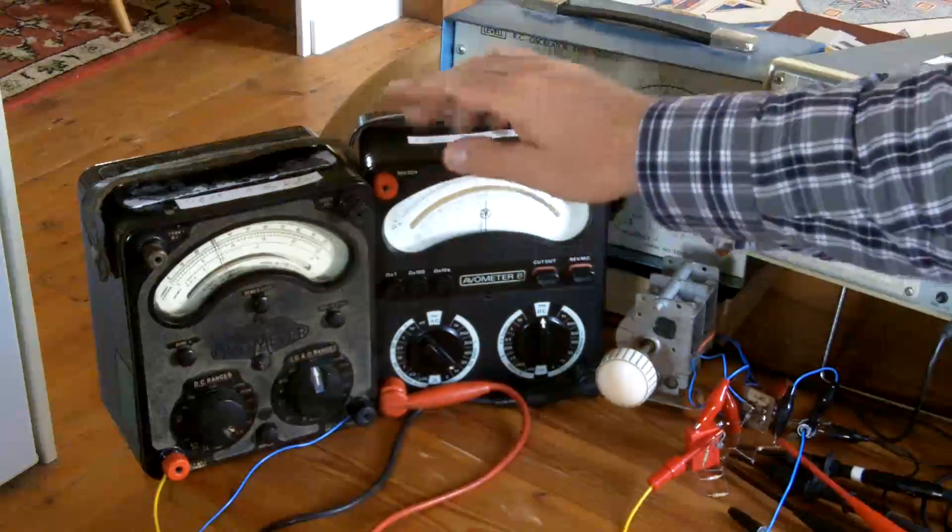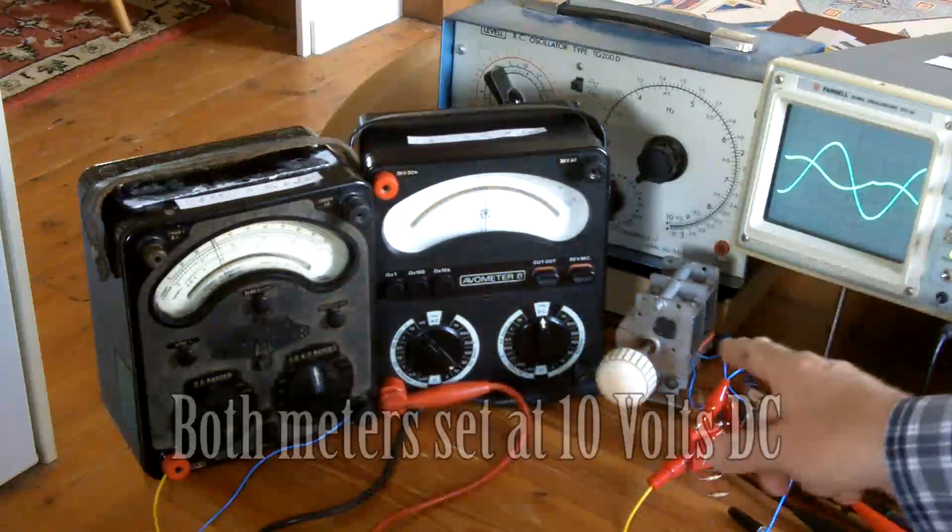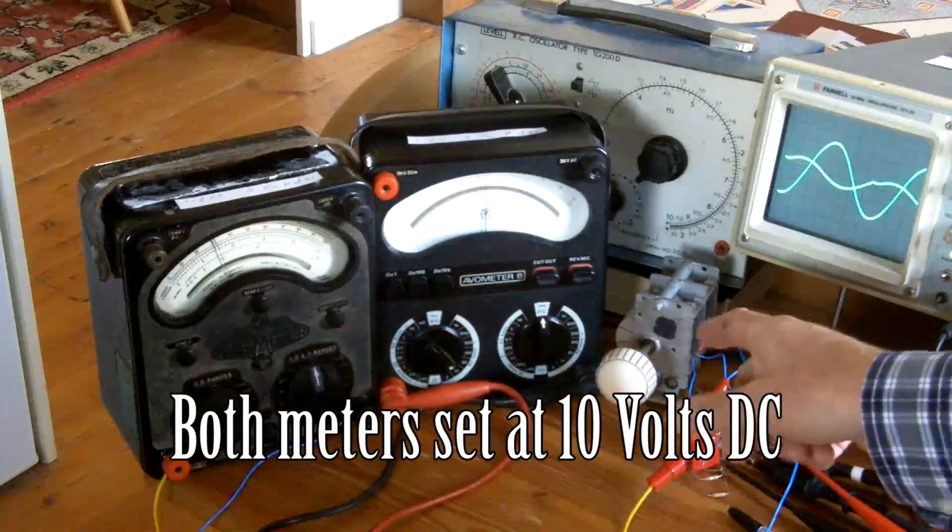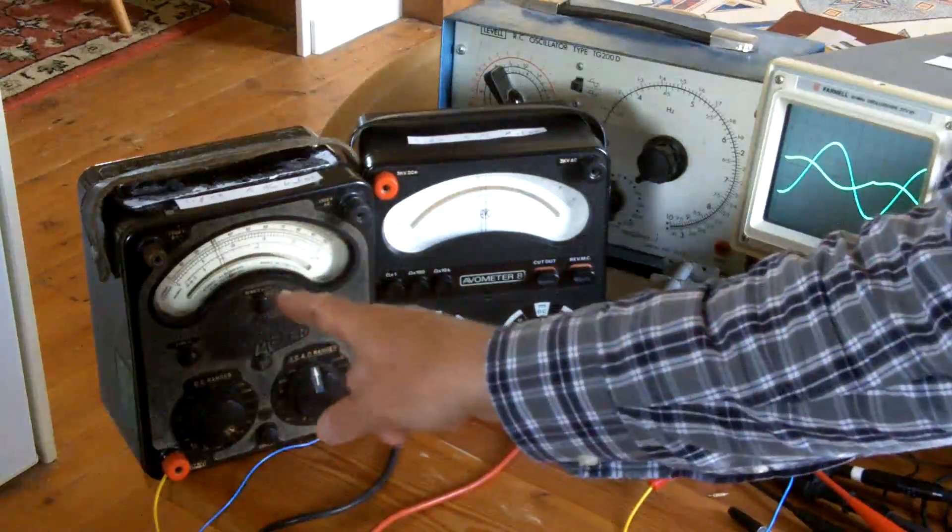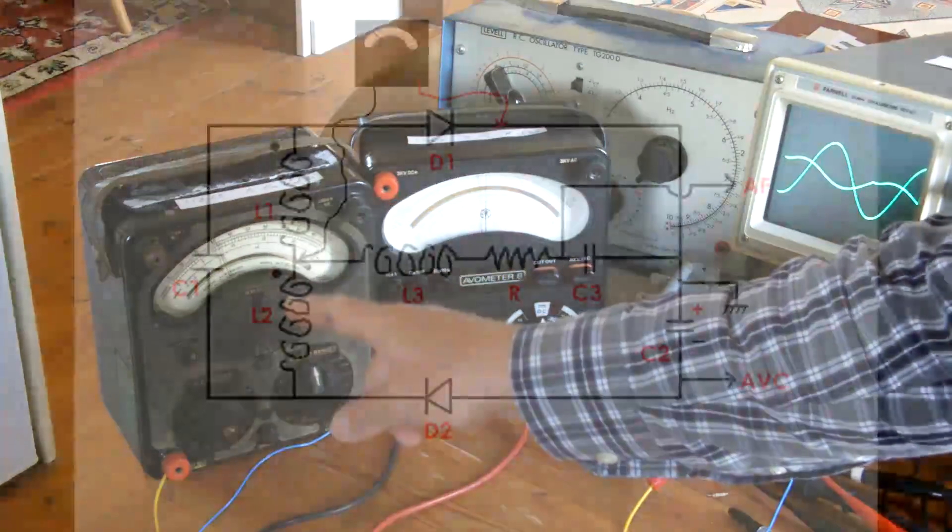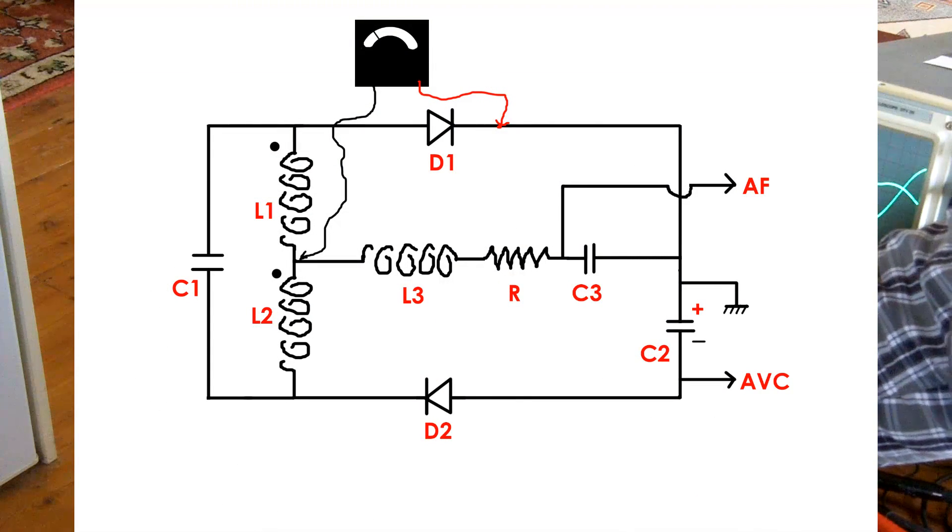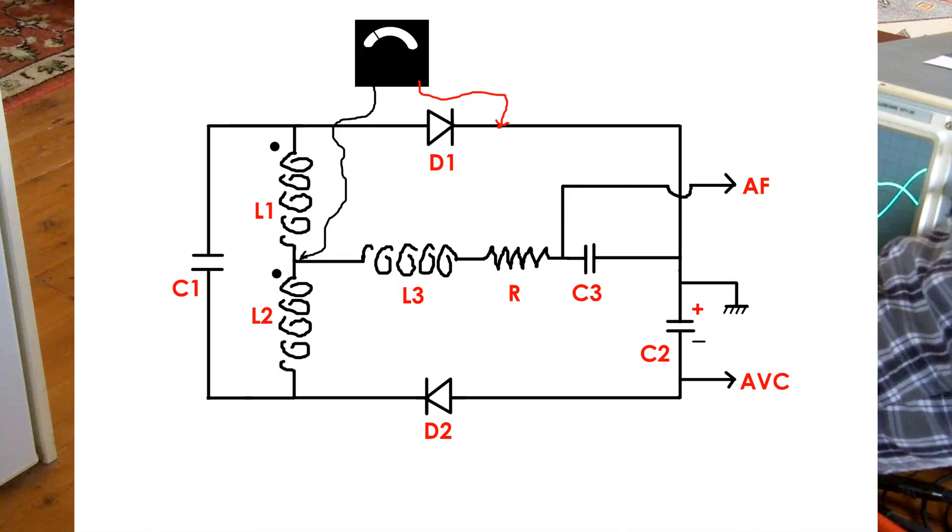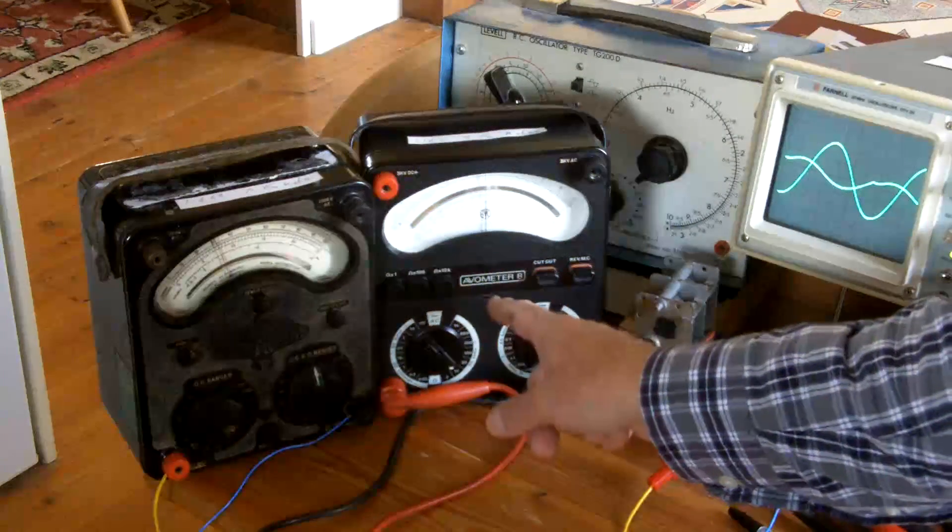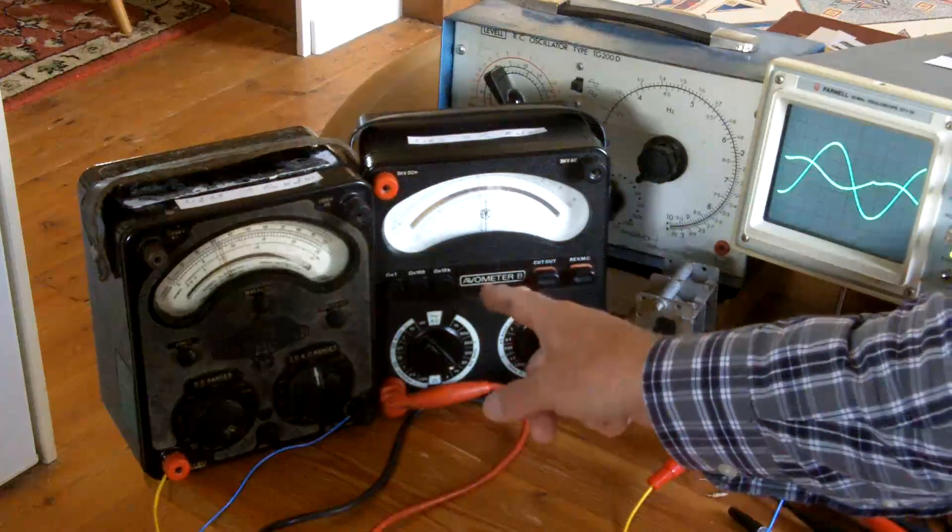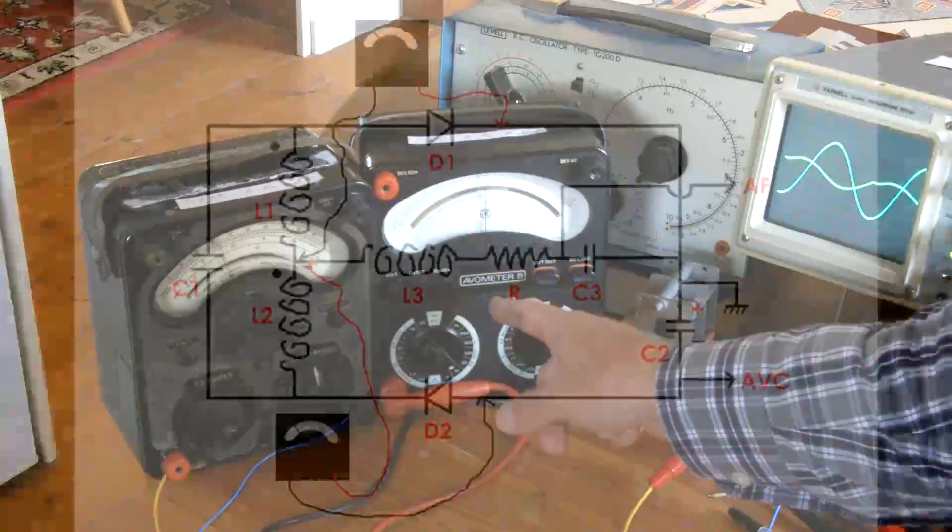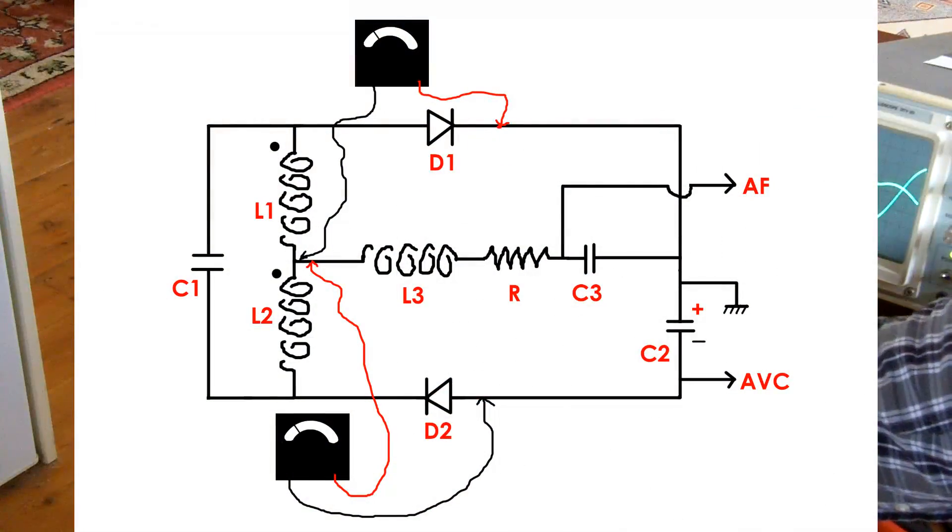Here I have the two meters connected across the homemade ratio detector. This meter is connected between the junction of L1 and L2 and the cathode of diode D1. This meter is connected between the junctions of L1 and L2 and the anode of D2.